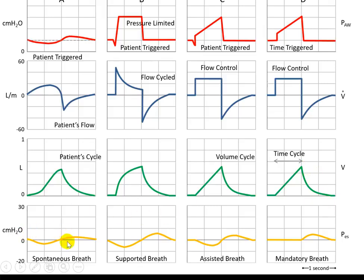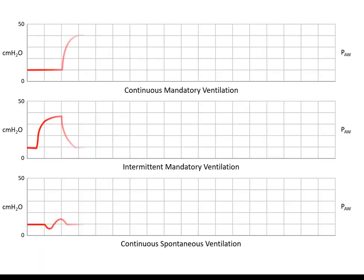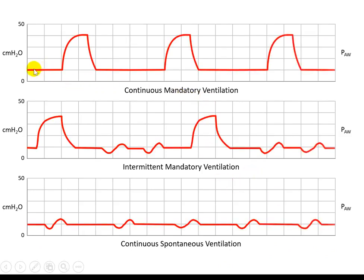We appreciate that there are only four different types of breaths in any mode: spontaneous, supported, assisted, or mandatory. Putting this together gives us the breath sequences. In continuous mandatory ventilation, all breaths are time triggered, the machine delivers the control — either volume or pressure — and the cycle is either time or volume. This is continuous mandatory ventilation.